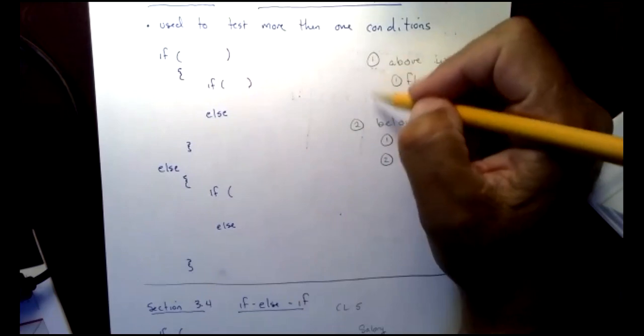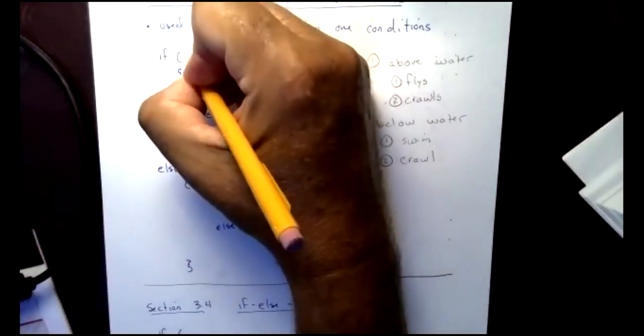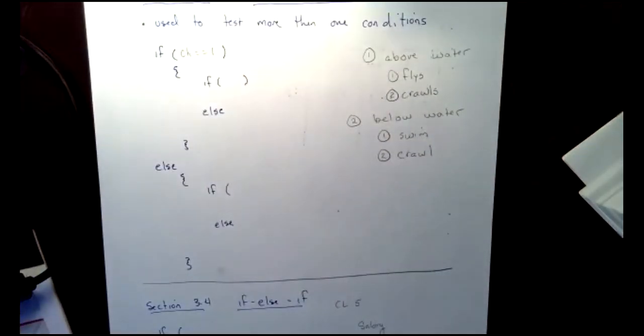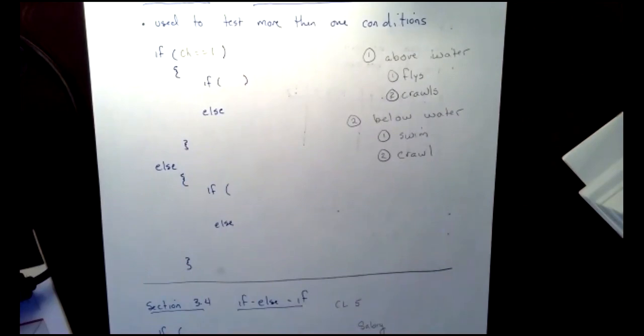So I might want to say if, and let's say this first one or two, you know, I'm going to say if it's above water, enter one. If it's below water, enter two. So I might say if CH for choice equals one, then I'm going to get into the body of my if statement. Now you notice again, the body starts with the left brace and the right brace. So inside of here, I could have almost anything.